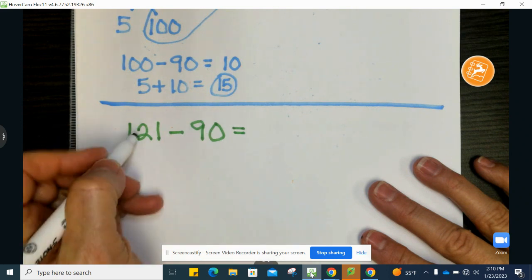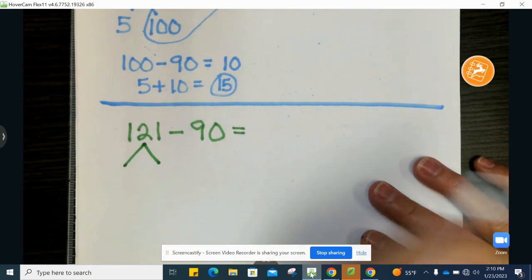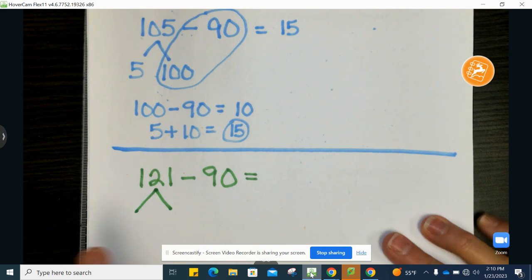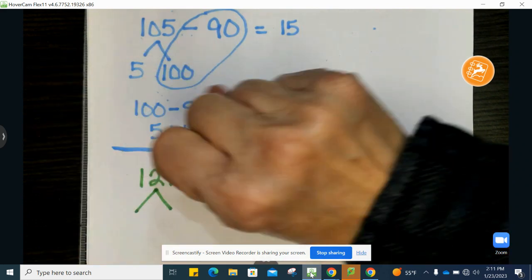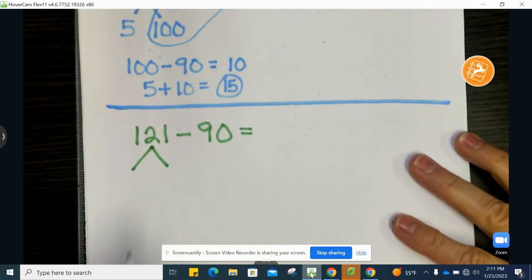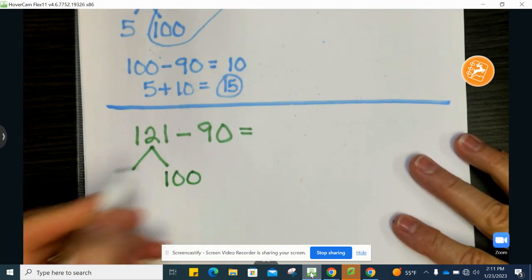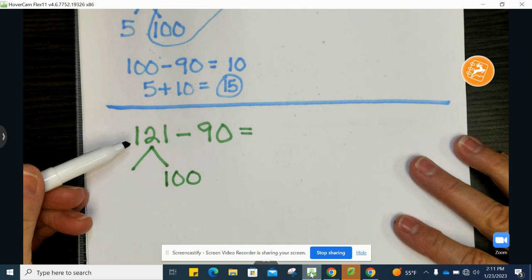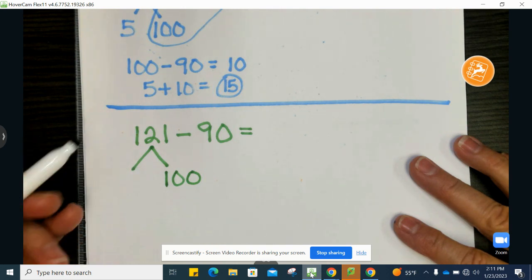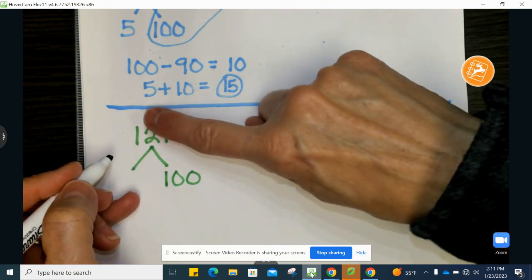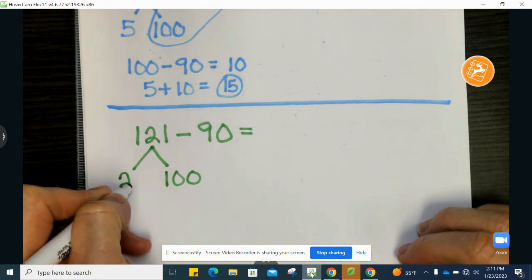121 minus 90. I want to decompose the 121. I want to pull out 100 just like I did before. Pull out 100. And then when I look at 121, and I pulled out 100, I see that all I have left is 21.